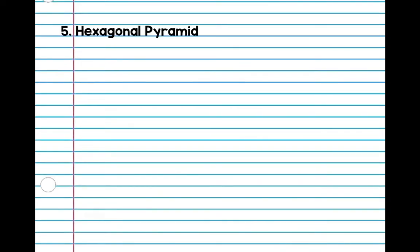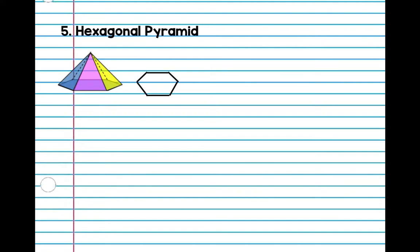Number five: hexagonal pyramid. Looking at 'hexagonal,' we know we're working with a hexagon shape. It kind of looks like a diamond. Draw a hexagon first, then you're going to have a vertex at the top, and then just connect the lines.